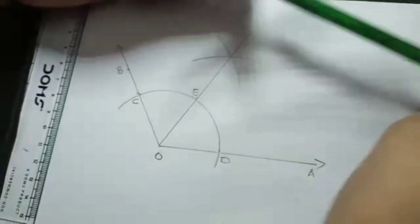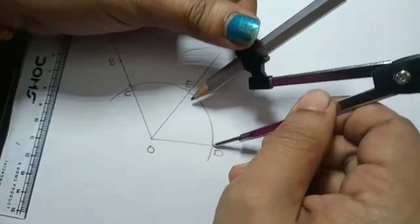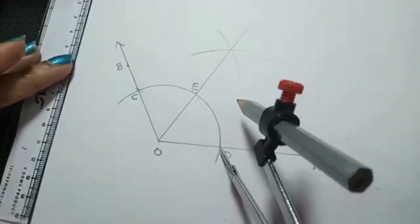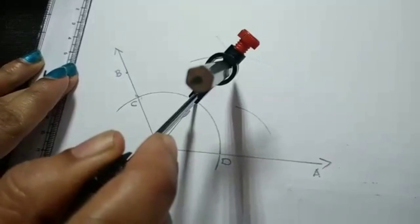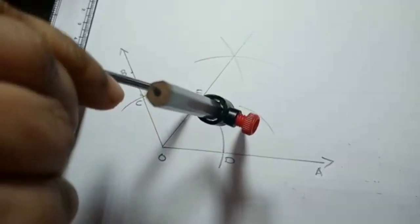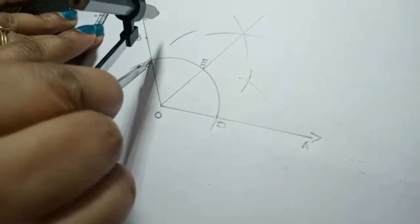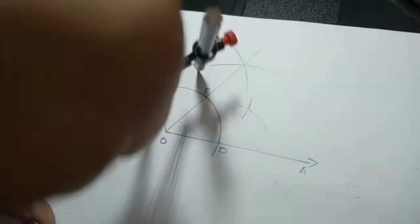Okay, little less. It's not the exact measurement. So I have taken little less. Now, what we have to do is D as a center, draw an arc and E as a center, again, draw another arc. Okay, so now E as a center, draw an arc and C as a center, draw another arc.